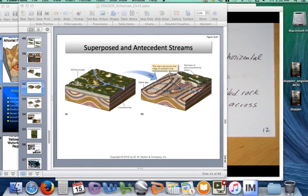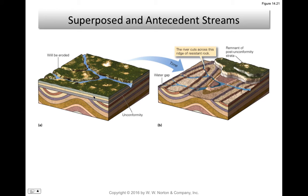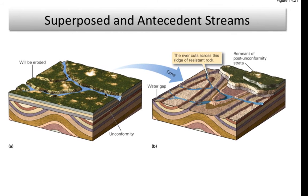In the example, horizontal homogeneous rock develops a dendritic pattern. Over time, erosion exposes the folded strata below the unconformity. The superposed stream will cut through the resistant layers. A good example of such a river is the Susquehanna River in the Appalachians.